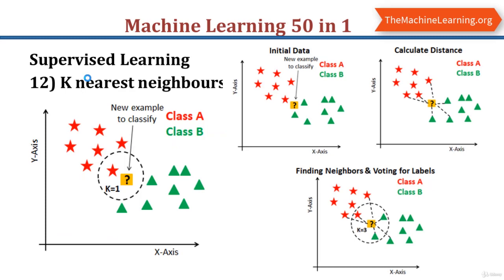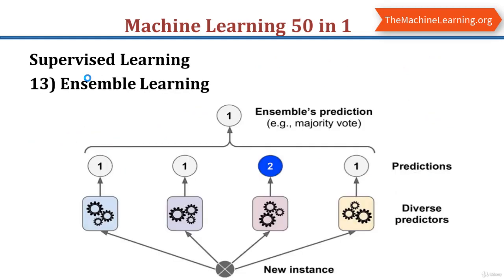The KNN algorithm is used for both regression and classification. When KNN is used for regression, the prediction is based on the mean or median of the K most similar instances. When KNN is used for classification, the output is the class with the highest frequency from the K most similar instances — each instance votes for its class and the class with the most votes is taken as the prediction. KNN assumes that similar things exist in close proximity. We run the KNN algorithm several times with different values of K and choose the value that reduces errors while maintaining the algorithm's ability to accurately make predictions on unseen data.